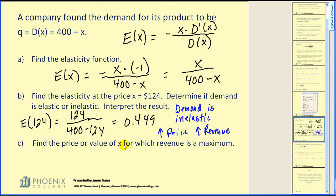Find the price or value of x for which revenue is a maximum. Remember that revenue is maximized when elasticity equals one. So we can set our elastic function equal to one and solve. I'm going to put one over one and then do cross product. So I have x = (400 - x) × 1 = 400 - x. Solving this equation, I'd add x to both sides. 2x = 400. Dividing by two, we can see that x = 200.